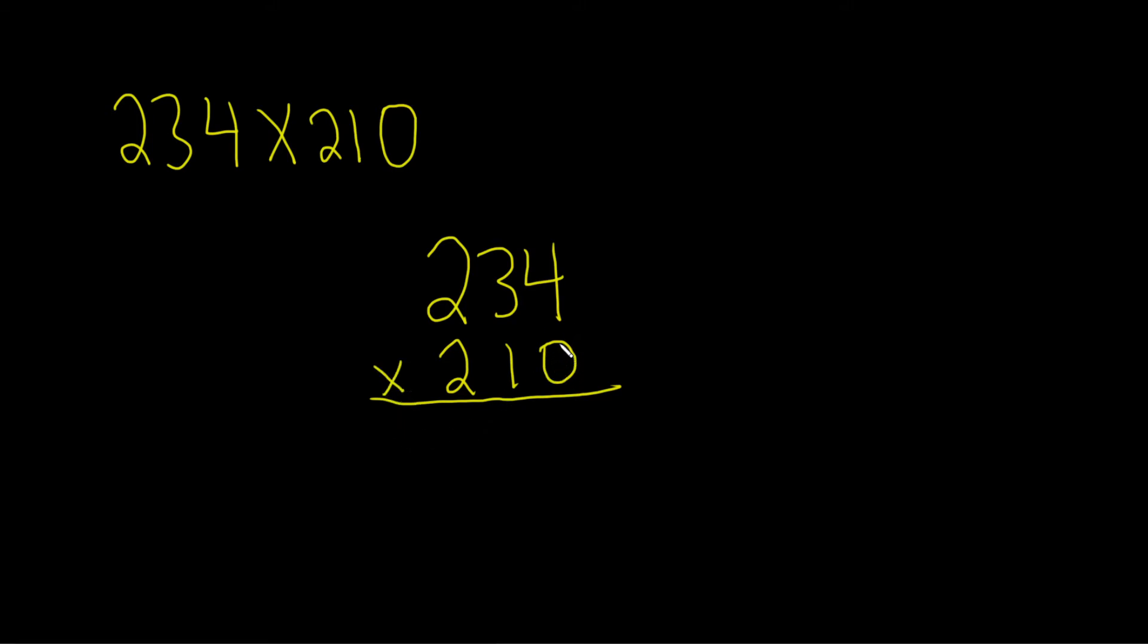So we start with the 0. 0 times 4 equals 0, 0 times 3 is 0, 0 times 2 is 0. So we just took the 0 and multiplied it by all of these.